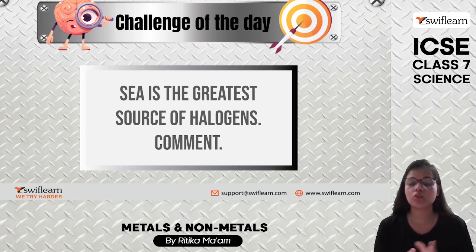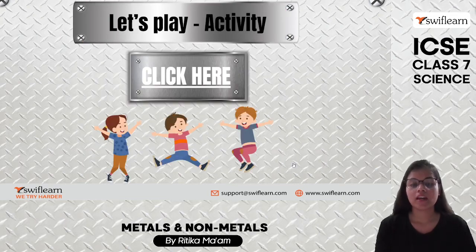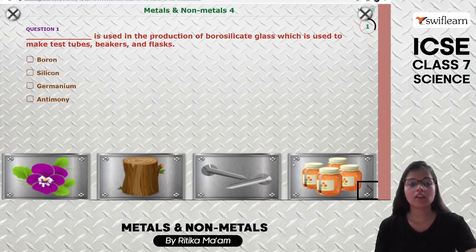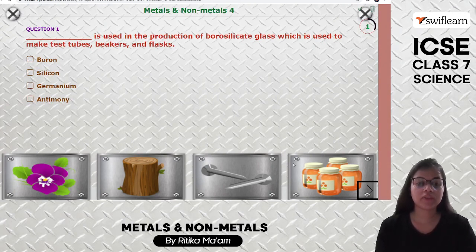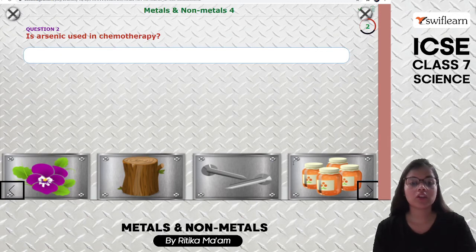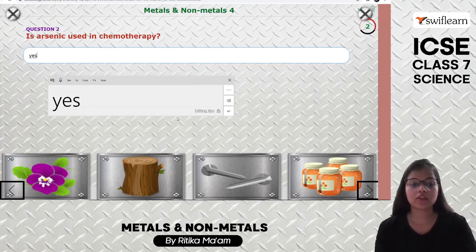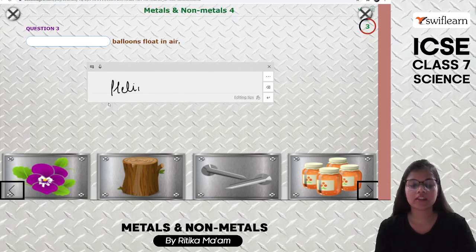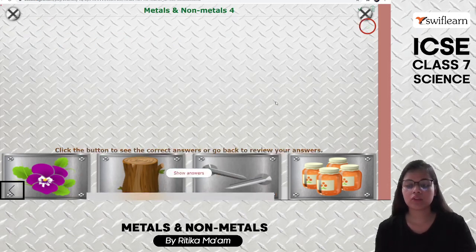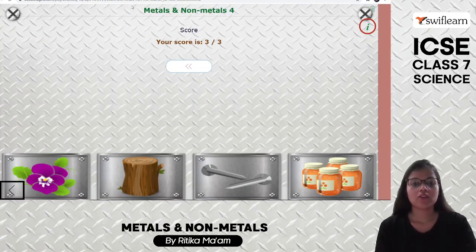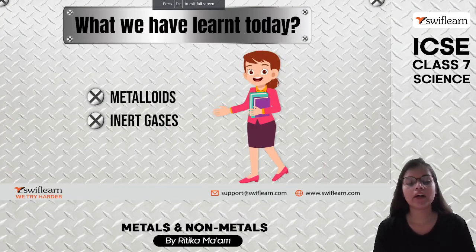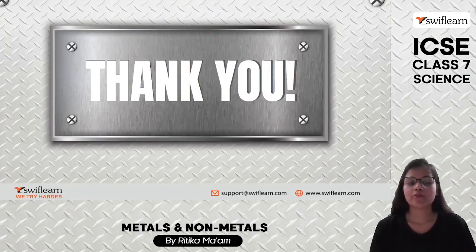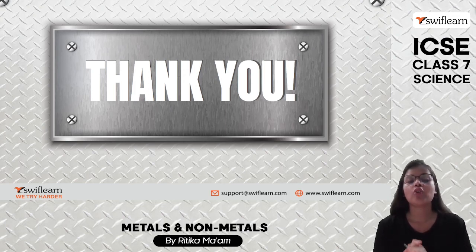Let's recap with an activity. Boron is used in the production of borosilicate glass for making test tubes, beakers, and flasks. Arsenic is used in chemotherapy to treat cancer — yes! And a helium balloon floats in the air because helium is lighter than air. Today's session was a brief but comprehensive revision of metalloids and inert gases. I hope you understood every single thing.